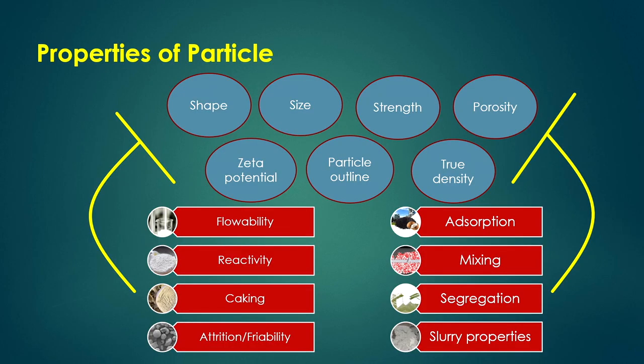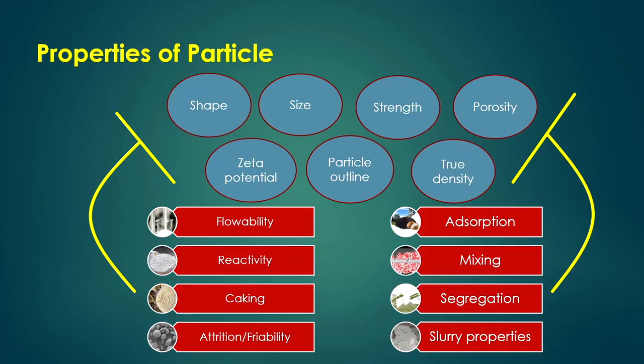There are several properties of particles: shape, size, strength, porosity, zeta potential, particle outline, and true density. All these properties affect the flowability of particles and reactivity — whenever particles are used in a reaction, the reactivity depends on size, shape, strength, porosity, zeta potential, and true density.